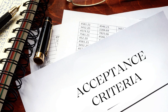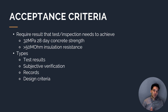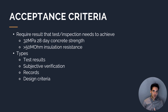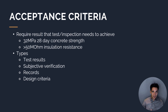Then we need to define our acceptance criteria — what standard does the testing have to meet? For example, for concrete testing, it might need to achieve a strength of 32 MPa within 28 days. For an insulation resistance test on an electrical cable, it might need to achieve greater than 50 megaohms. These could be test results, subjective verification by an expert, records like photos, or certain desirable criteria — it really depends on the specific check or test being done.